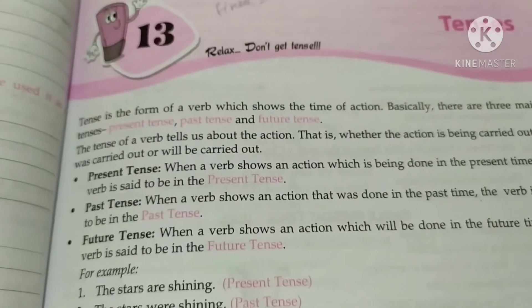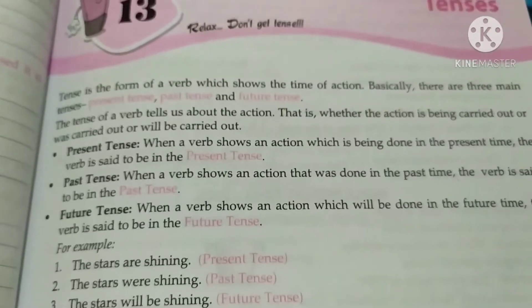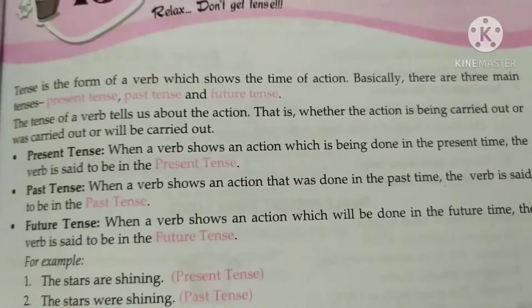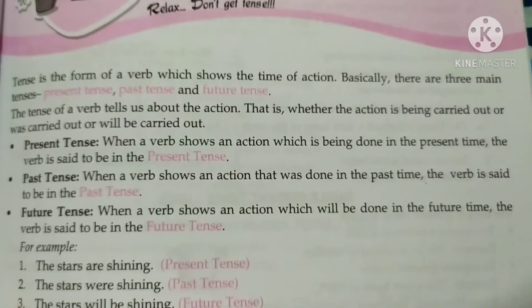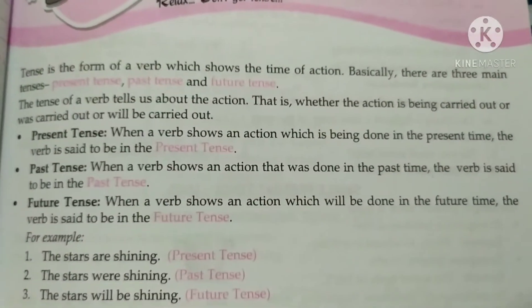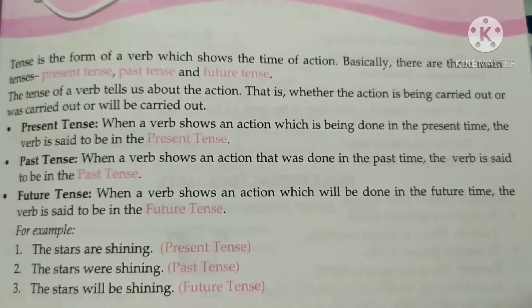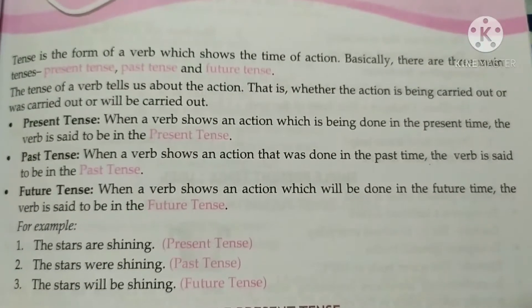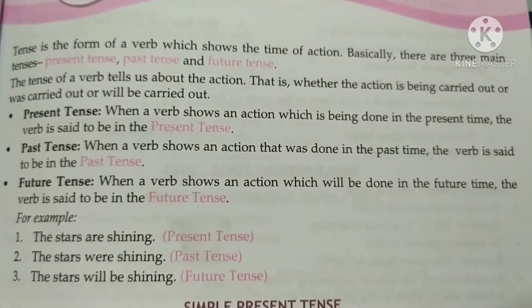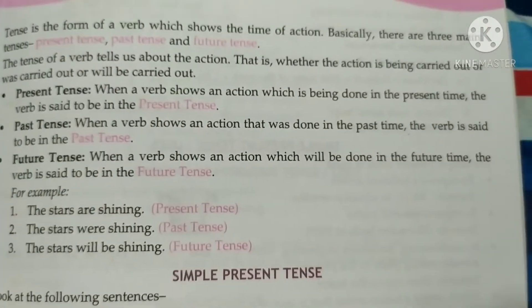Tenses is the form of a verb which shows the time of an action. Basically, there are three main tenses: present tense, past tense, and future tense. The tense of a verb tells us about the action — whether the action is being carried out, was carried out, or will be carried out.